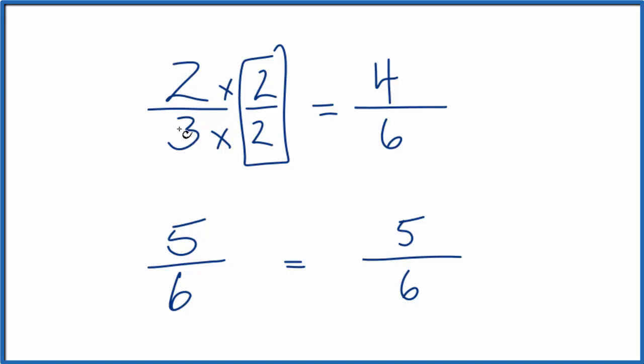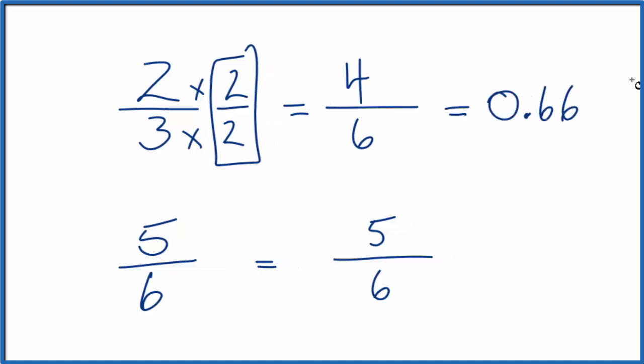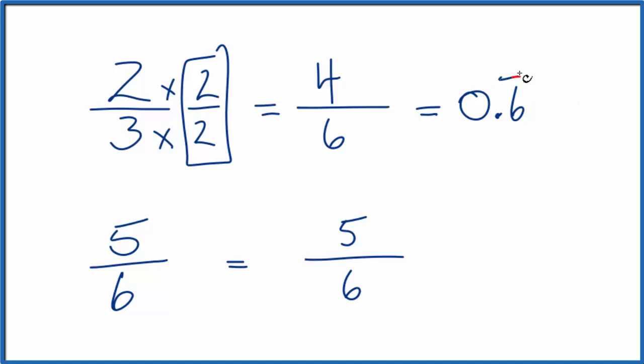So if we do that, 2 divided by 3 or 4 divided by 6, both of these give us 0.66 and it repeats. So let's just put a line over the 6.